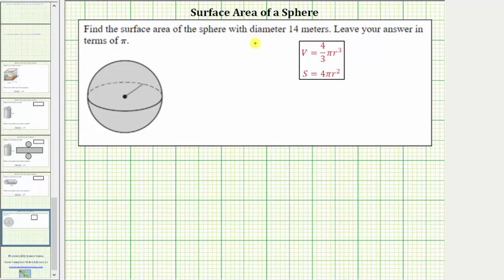Notice how for this question, we are given the diameter as 14 meters. The diameter is this length here, which is the distance from any point on the surface to the opposite side of the sphere, passing through the center.